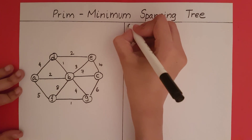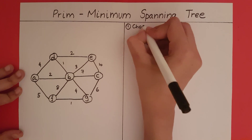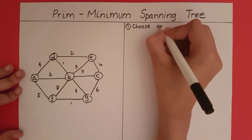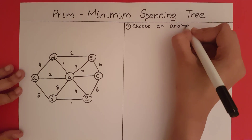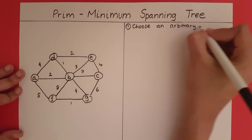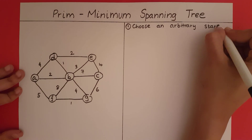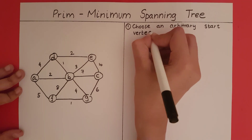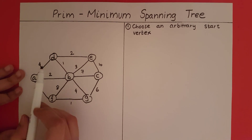The first step in Prim's algorithm is to choose an arbitrary start vertex. Let's say we start at A.